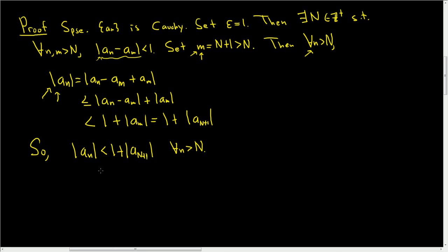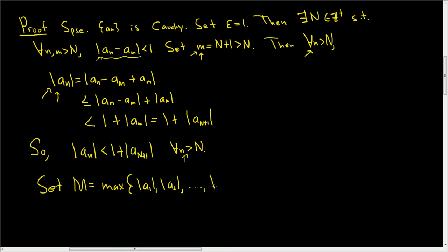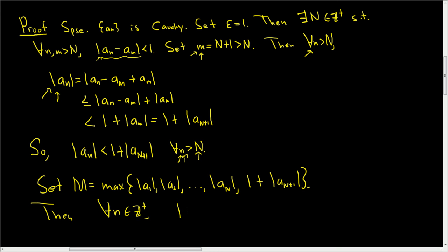Now for a sequence to be bounded, it has to be bounded for all natural numbers, so this is only true for little n bigger than N. We also have to bound the earlier terms. So we set big M equal to the maximum of the absolute values of all the terms of the sequence prior to the ones we've bounded — going up through a_N — and include this piece here. Then for all n, the absolute value of a_n is less than or equal to big M, and that completes the proof.